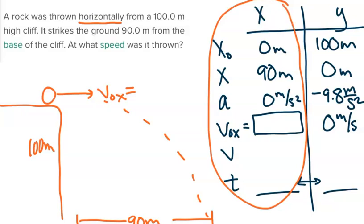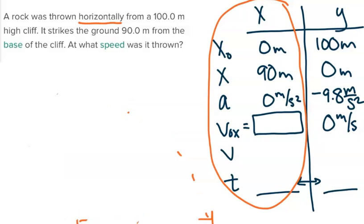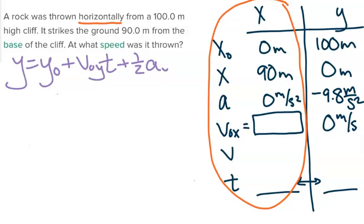So we can look at the y list of variables and identify that we need to use our longest kinematic equation: y equals y initial plus our initial y velocity times time plus one-half acceleration times time squared. So we can solve for our time here, and once we do, we can plug that into the x direction and then use that to solve for initial x velocity.